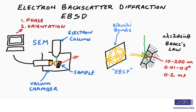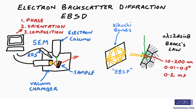In addition, we can couple this with another technique on the SEM, energy dispersive x-ray spectrometry, or EDS. EDS gives us information about the composition, so we can combine the crystallographic information from EBSD with the chemical or compositional information from EDS. This combination makes EBSD with EDS the perfect technique for automated microstructural characterization.